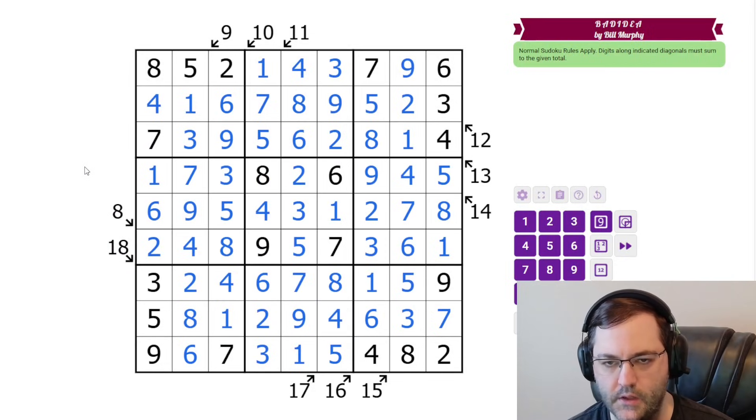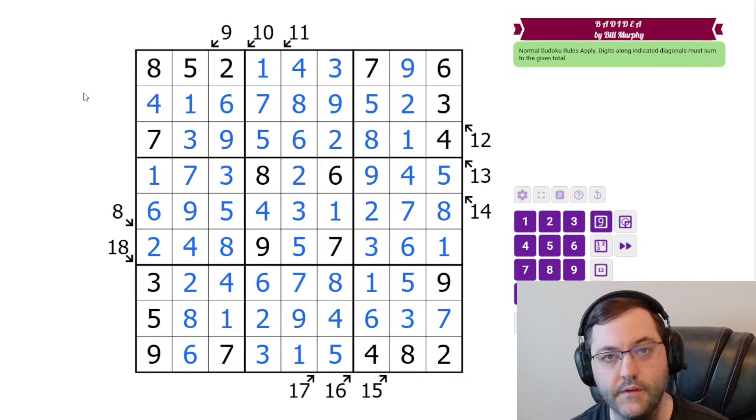And that's the solution. Really nice puzzle. Bill mentioned this is asymmetric with the clues, but it has this lovely pattern 8 through 18 in order around the grid. So, very pretty puzzle. Let me know how you did in the comments, and I will see you next time.